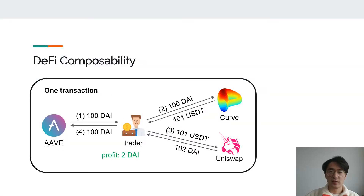The invention of blockchains promotes the development of the so-called decentralized finance. DeFi is a financial system on top of a smart contract based blockchain. The mechanisms and logic of DeFi protocols are programmed in smart contracts that are publicly verifiable. Because of smart contracts, DeFi has a special trait called composability compared to traditional finance.